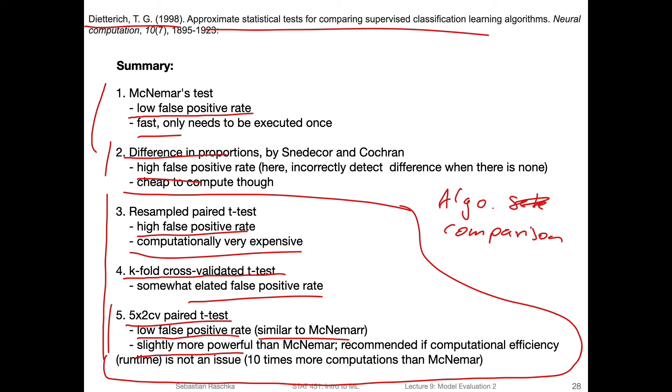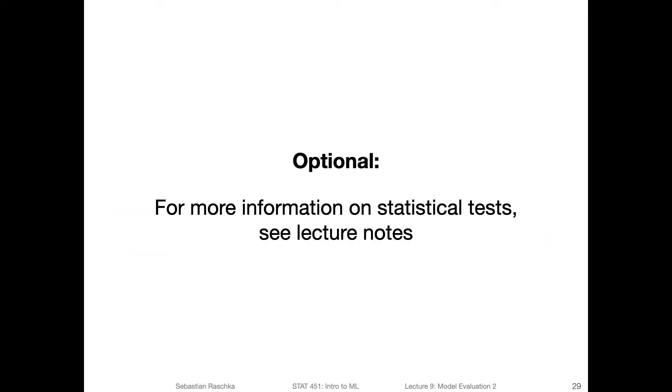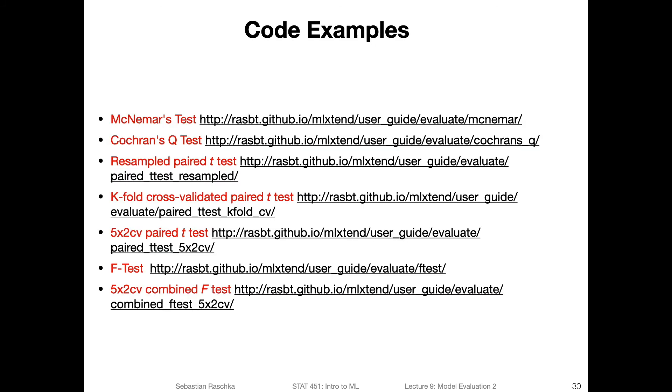I implemented most of them in mlxtend. So the McNemar's test, Cochran's Q test, the resampled paired t-test, which is actually not recommended, but for educational purposes I implemented that here, the k-fold cross-validated paired t-test, five times two CV paired t-test recommended in Tom Dietterich's paper, regular F test, and also the five times two CV combined F test. That's an improved version over the five times two CV paired t-test. I would recommend also looking at this one if you want to compare different models to each other.